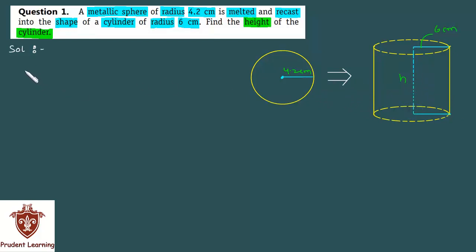Let us proceed with the solution. As no metal is lost, we have volume of cylinder equal to the volume of sphere.